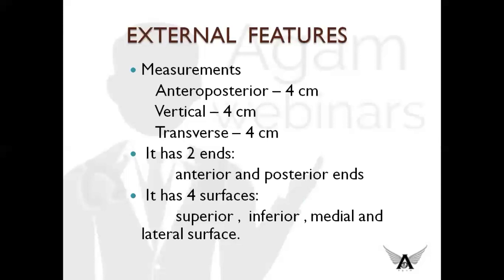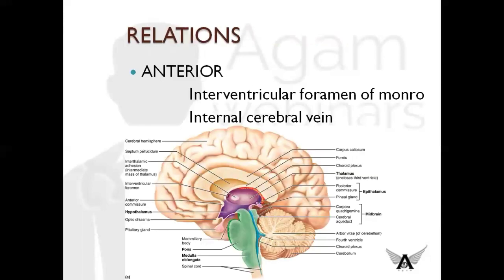Now let us look into the relations of the thalamus. The anterior relation: this is the medial view of the cerebral hemisphere. The anterior part of the thalamus, or anterior end, forms the posterior boundary of the interventricular foramen of Monro. And it is also related to the internal cerebral vein. So anteriorly: interventricular foramen of Monro and internal cerebral vein.